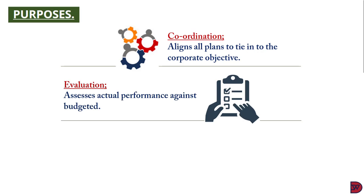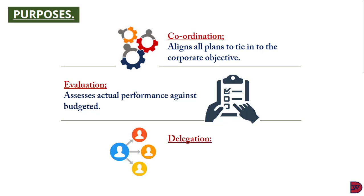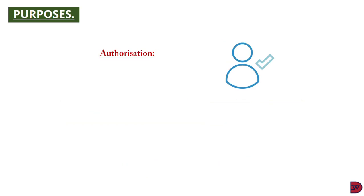The fifth purpose is evaluation — the budget serves as a target, facilitating proper assessment of actual performance, making it easier to determine whether a responsibility center (a department, managers, and their staff) was in line or deviated, and for necessary actions to be taken. Next is delegation: managers of departments will be better poised to assign responsibility to subordinates when the budget is prepared. For example, the sales manager can set quotas for each staff member based on the sales budget. Next is authorization.